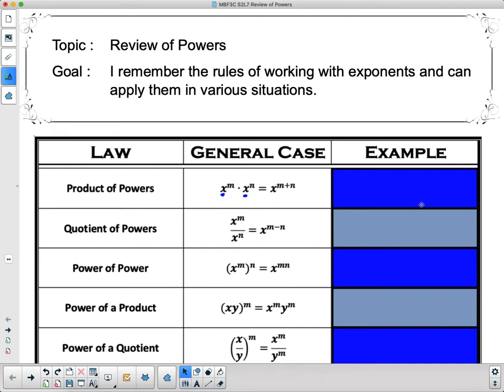Now what does that mean as far as an example goes? Well, here's an example. So we have 2 to the 3 times, that's what that dot means, is multiplication, times 2 to the 4. Now this means I have three 2's and another four 2's all multiplied together, so I just have to add those to see that, in total, I have seven 2's all multiplied together. So that's 2 to the exponent 7.